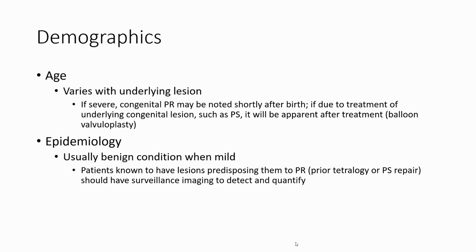Demographics: variable with underlying lesion. If severe congenital pulmonary regurgitation, it may be noticed shortly afterward. If due to treatment of underlying congenital lesion, such as pulmonary stenosis, it will be apparent after treatment, as seen in the image showing the pulmonary valve.